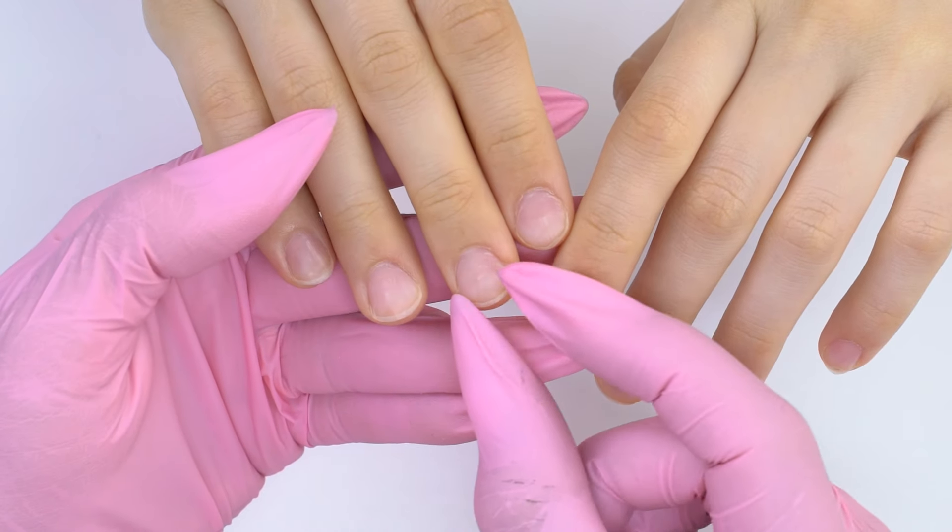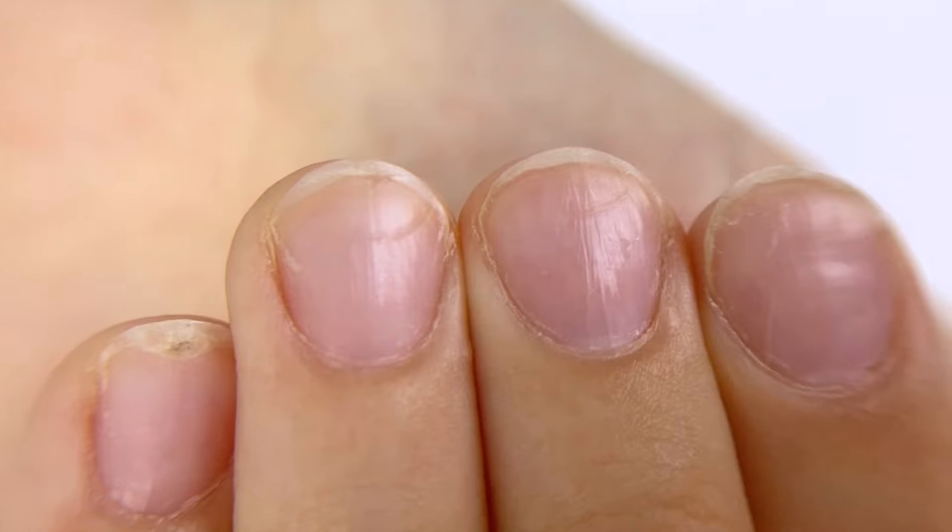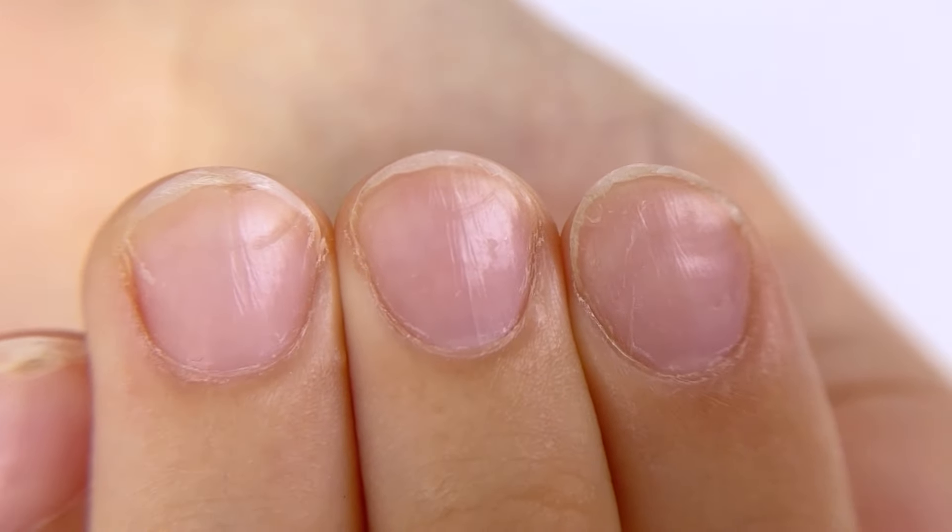Here are my model's nails. They are trapezoidal and the free edge is wider than the cuticle zone. Such nails won't always look good under just gel polish. So today, we will do nail sculpting and try to make these nails narrower and more elegant.